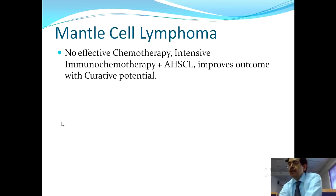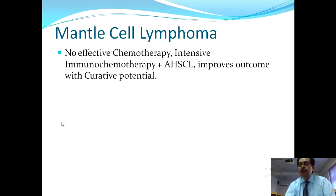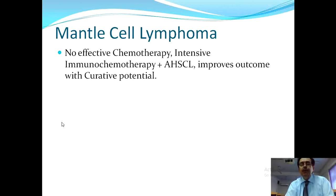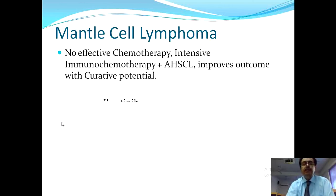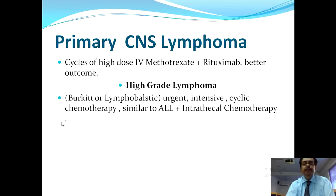Mantle cell lymphoma — presenting with weight loss, fever, lymphadenopathy, splenomegaly, and tonsillar enlargement — has no effective standard chemotherapy. The preferred treatment is intensive immunochemotherapy combined with stem cell transplantation, which improves outcomes with curative potential. Autologous hematopoietic stem cell transplantation is the better option. If relapse occurs, anti-CD20 monoclonal antibody rituximab can be offered.